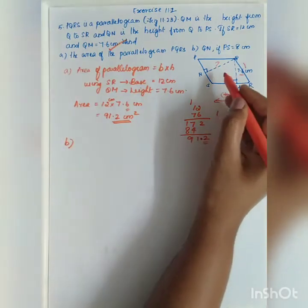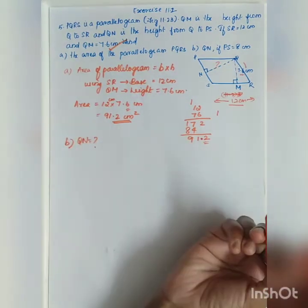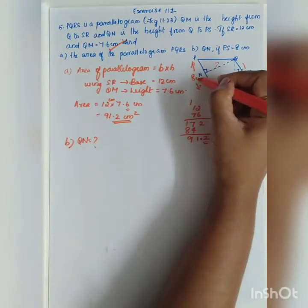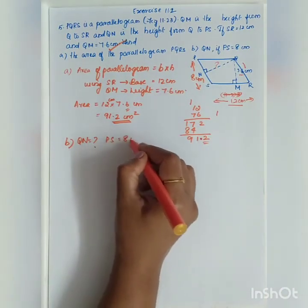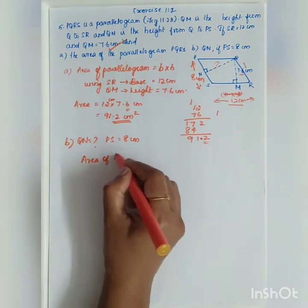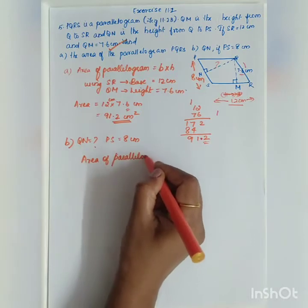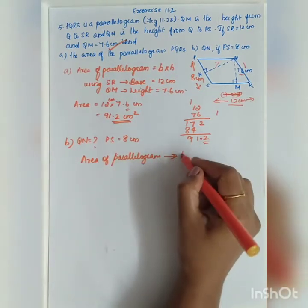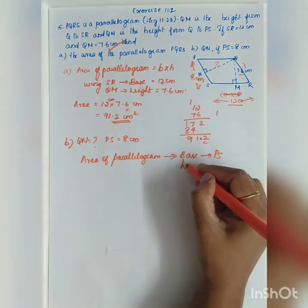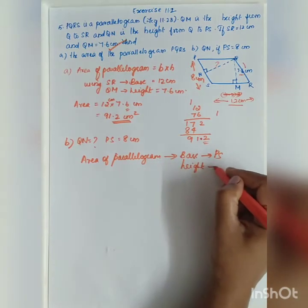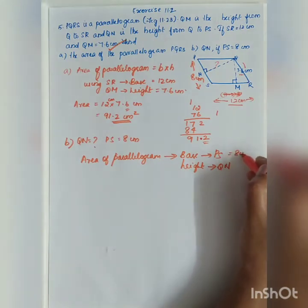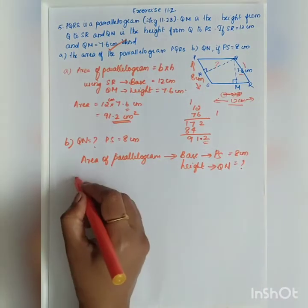Now, what about the second one? You have to find the height QN. QN is equal to question mark if PS is equal to 8 cm. I can again tell that area of the parallelogram using base as PS and height as QN. PS is given 8 cm, QN you have to find out.